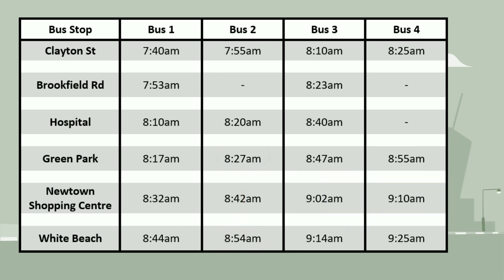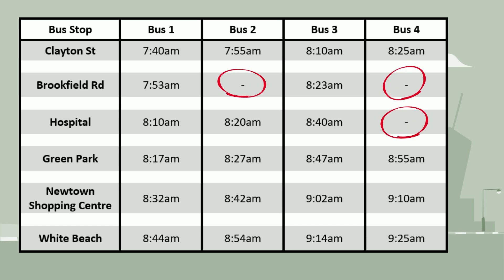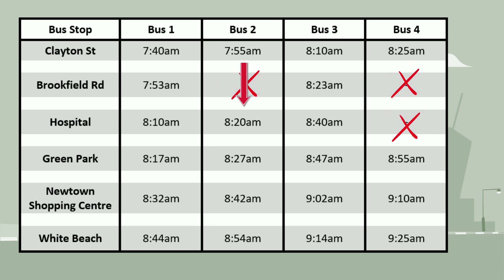You might have noticed that a few times on this timetable are missing. This means that the bus skips that particular stop. For example, bus 2 will go straight from Clayton Street to the hospital, without stopping at Brookfield Road. Bus 4 starts at Clayton Street and skips both the Brookfield Road and the hospital stops. Quieter stops are sometimes skipped like this as it makes the overall journey faster.